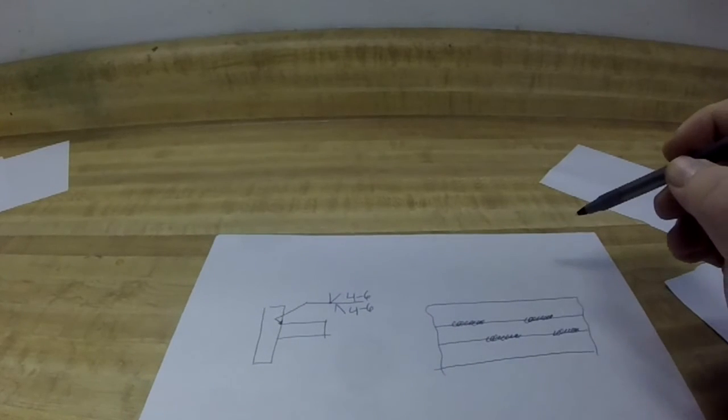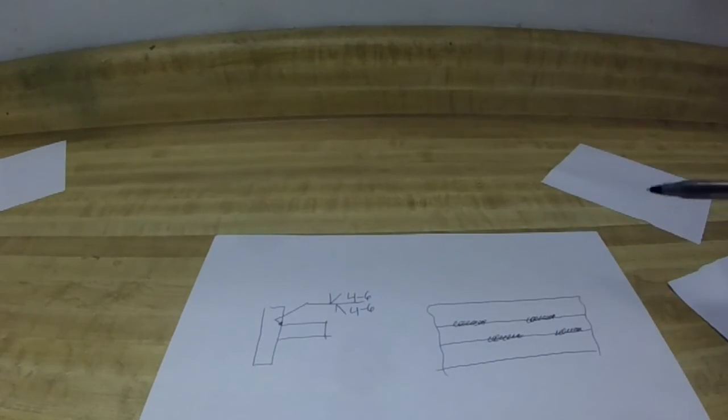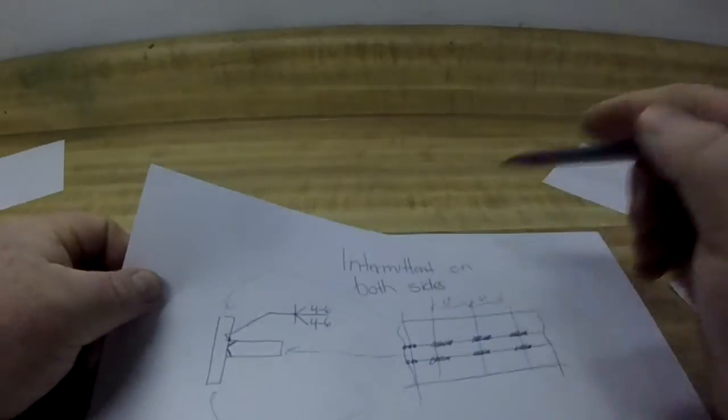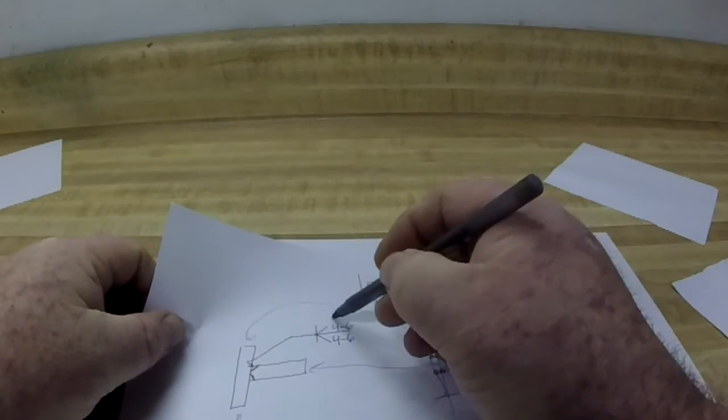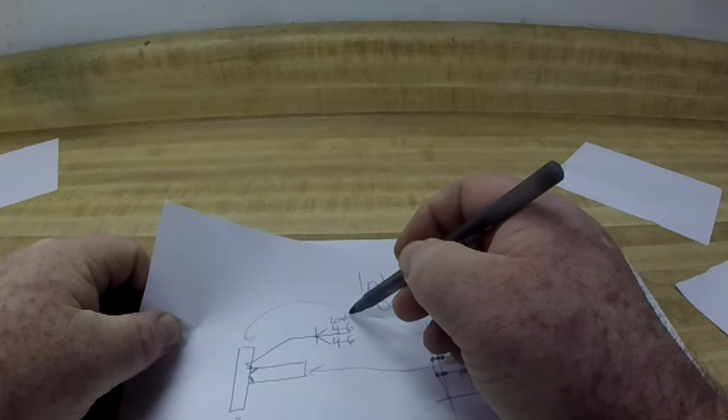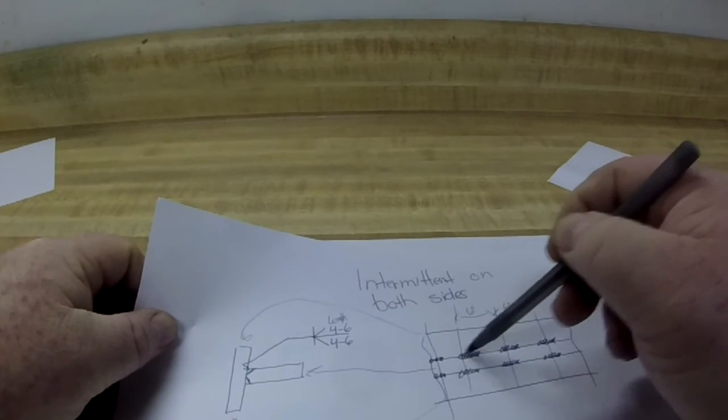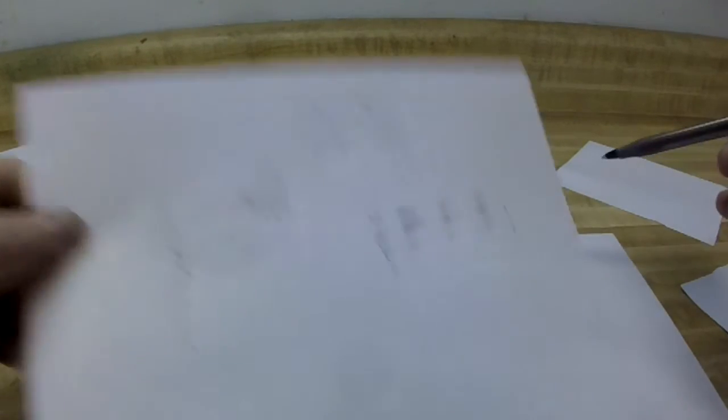A little correction from our last one. I said they were supposed to be four—this is the length. The length of this weld: four inches, six-inch center.